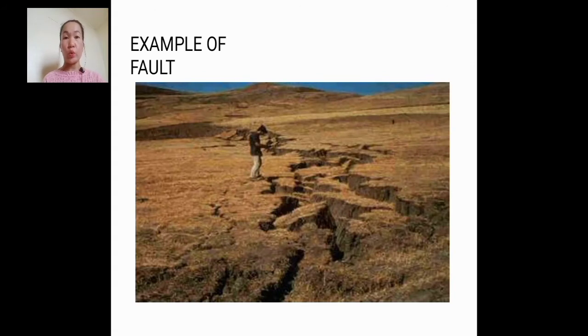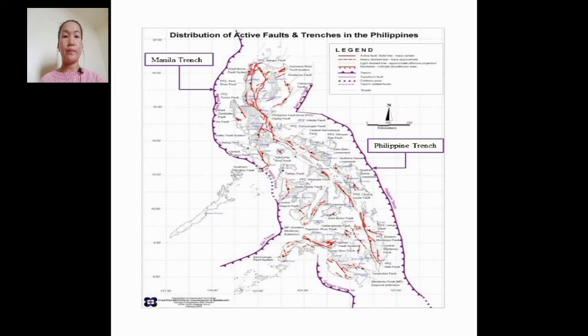Yan yung example picture ng lupa na nagpapakita ng fault — hindi yan ordinaryong crack lang, crack na malalim at pwede siyang magcause ng paggalaw ng lupa. This is the Philippine map. Yung mga lines na nakikita ninyo dyan — yung red lines at violet — represent ang mga fault lines, yung mga permanent crack sa lupa na nandito sa ating bansa. Medyo marami-rami yung mga fault lines dito sa atin.